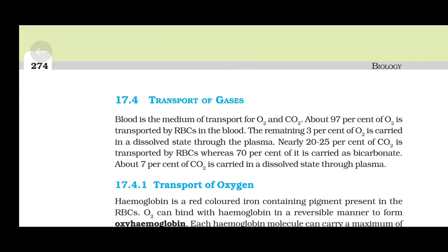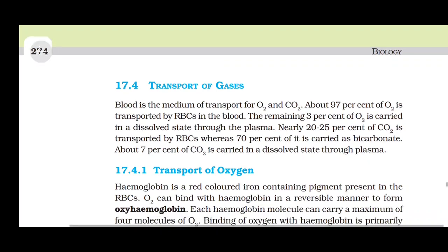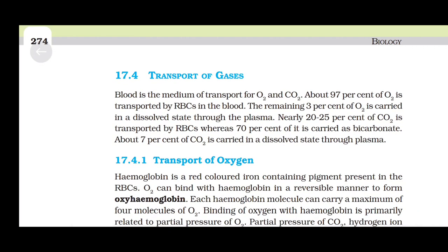Transport of Gases: Blood is the medium of transport for oxygen and carbon dioxide. About 97% of oxygen is transported by RBCs in the blood, and the remaining 3% is carried in a dissolved state through the plasma. Nearly 20 to 25% of carbon dioxide is transported by RBCs, whereas 70% of it is carried as bicarbonate. About 7% of carbon dioxide is carried in a dissolved state through plasma.